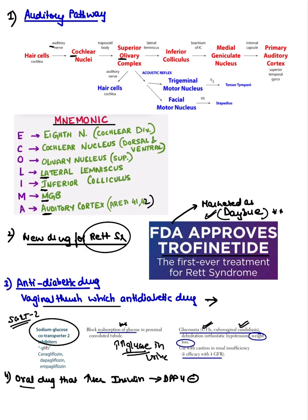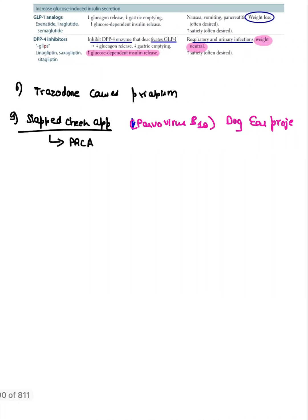The next question was about which oral drug increases glucose-induced insulin secretion. From First Aid, two drugs do this: GLP-1 analogs and DPP-4 inhibitors. Since the question specifies an oral drug, the answer is DPP-4 inhibitors. DPP-4 drugs are weight-neutral, while GLP-1 analogs are weight-loss drugs.